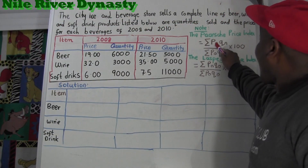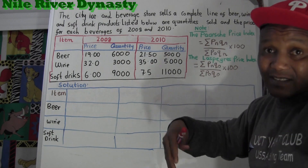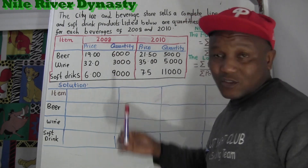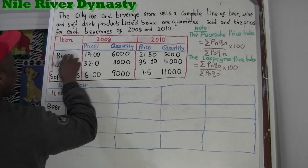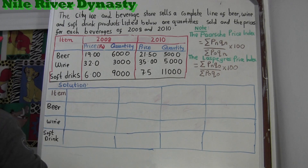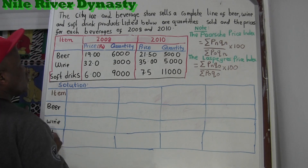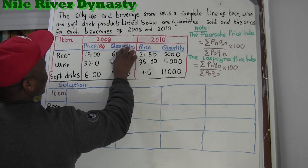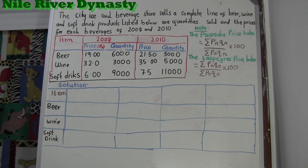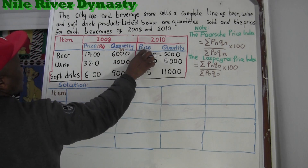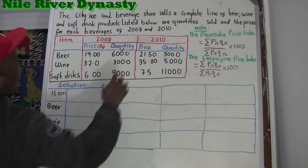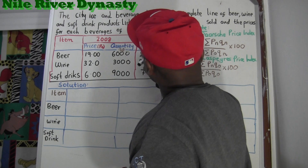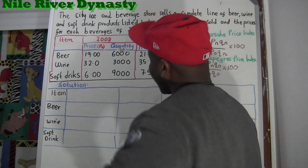Now if you look at the formula we need to have pn·qn. What is pn? We've got two years here: there's a change in price and quantity from 2008 to 2010. The price when things initially started is p-naught (p0), so for beer this is p0. The quantity at the start is q-naught (q0). So 2008 values are p0 and q0.